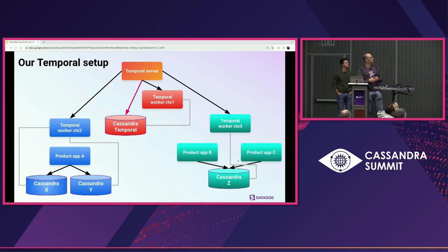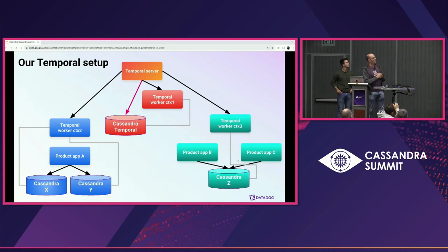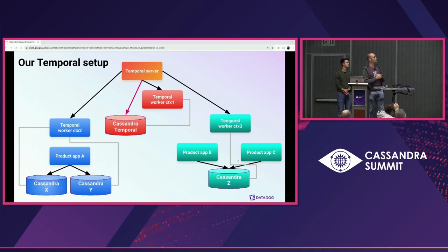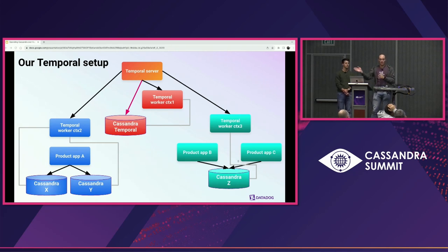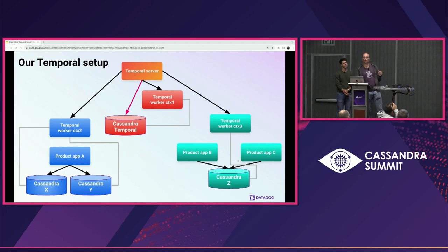Let me describe our Temporal setup. We have an orange zone with the Temporal server — the headquarters of Temporal — running as an application. It delegates execution of workflows to Temporal workers. We have two different workers, each color representing a Kubernetes cluster. Worker blue operates on Cassandra clusters X and Y, and the other worker operates on the rest. Temporal does the work of dispatching things to the right place. One thing to note: there's a Cassandra that is both operated by Temporal and powers Temporal, so pay attention when operating on that cluster.